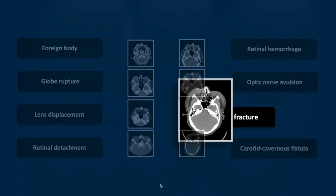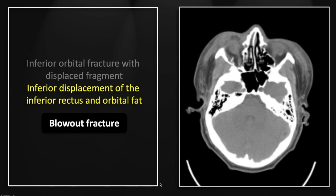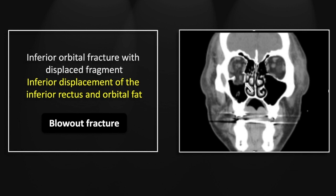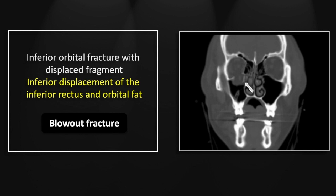The next case is an obligate case when dealing with orbit trauma: a straightforward blowout fracture. You can't rely on the axials — you can see disruption in the floor of the orbit and herniation of orbital fat into the sinus below, as well as herniation of the inferior rectus muscle. In the early days of CT the reformats were so poor we had to call these on the axials, but with good coronals available today that's no longer necessary. You can see the trapdoor displaced fragment from the orbital floor and herniation of the orbital fat and inferior rectus muscle.